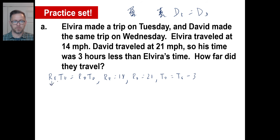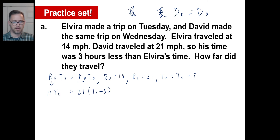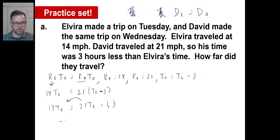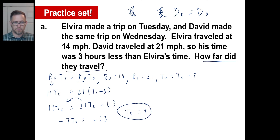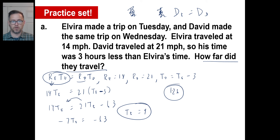Now we substitute. Rate of Elvira is 14, time of Elvira is unknown — T sub E. Rate of David is 21, time of David is T sub E minus 3. This equation has only one variable: 14 T sub E equals 21 T sub E minus 63. Moving terms: 14 minus 21 is negative 7 times T sub E equals negative 63, so the time of Elvira is 9 hours. They ask how far they traveled — Elvira's rate was 14 miles an hour and her time was 9 hours: 14 times 9 is 126 miles.